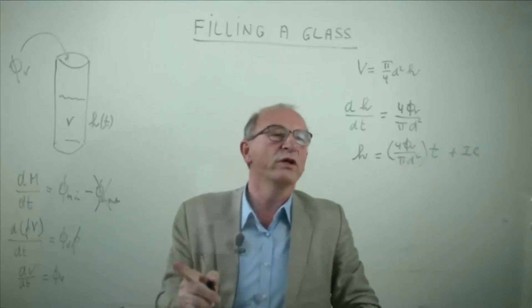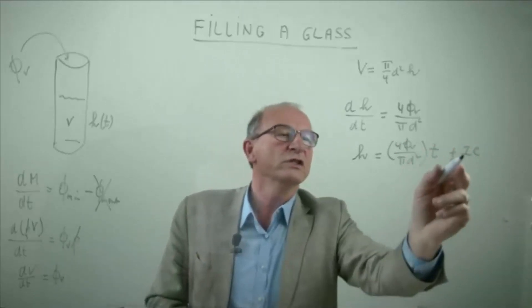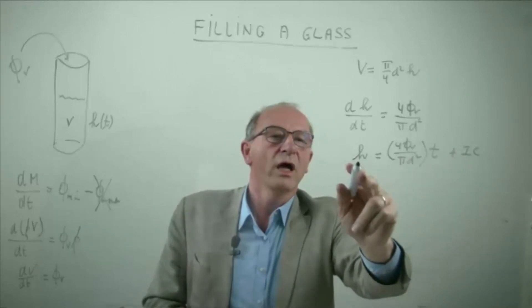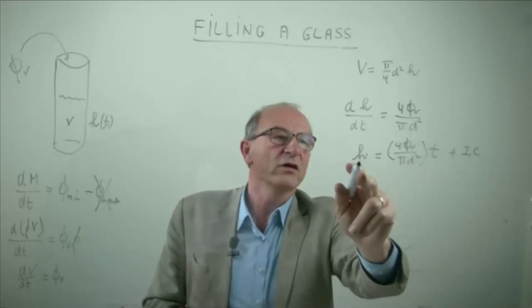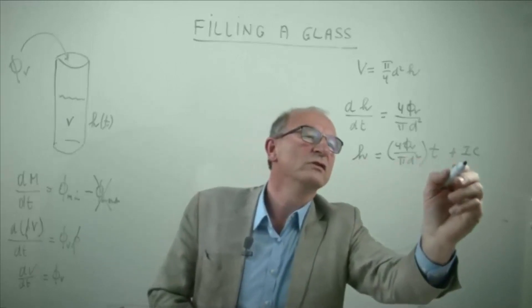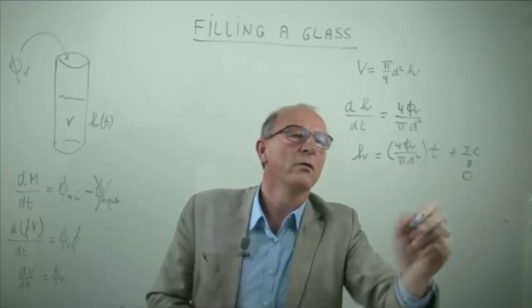We know that there was no liquid in the glass initially. So this integration constant... the height is 0 and t is 0, so this constant should be 0.